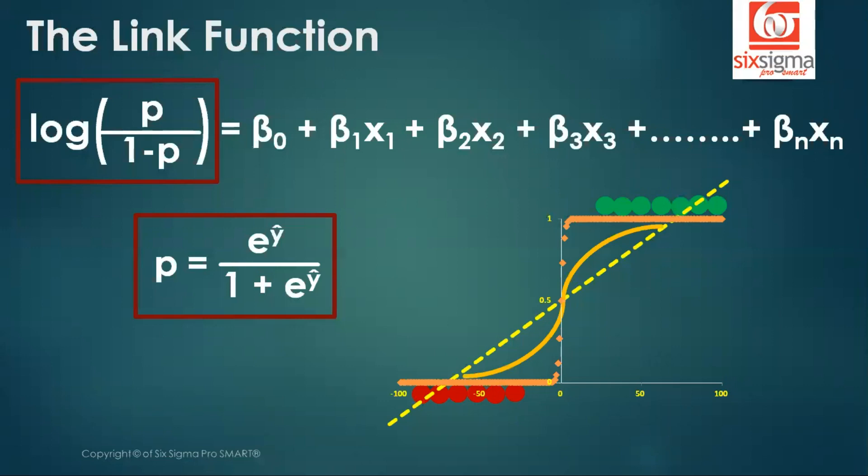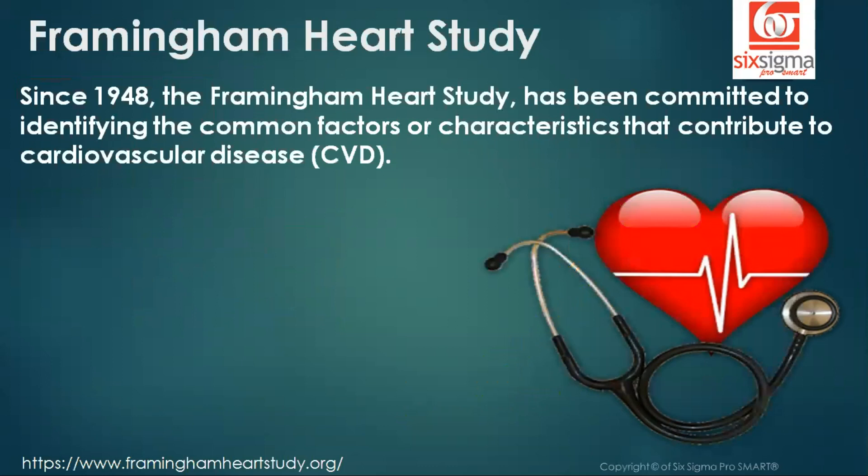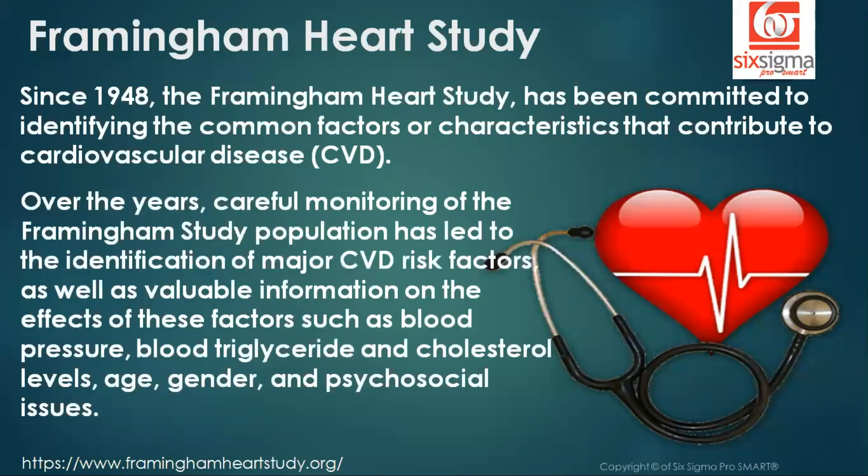Let's just look at some use cases of logistic regression. It's one of my personal favorites, and I always talk about it because I believe this is a classic example of how analytics can actually save lives. Since 1948, the Framingham Heart Study has been committed to identifying the common factors or characteristics that contribute to cardiovascular disease. Over the years, careful monitoring of the Framingham study population has led to the identification of major cardiovascular disease risk factors, as well as valuable information on the effects of these factors, such as blood pressure, blood triglyceride, and cholesterol levels, age, gender, and psychosocial issues. So a lot of what comes to us as common sense today is an output of this study, and it deserves the due credit.